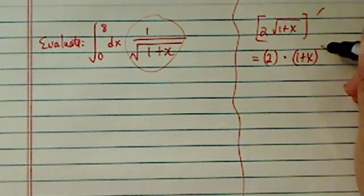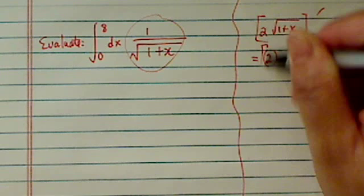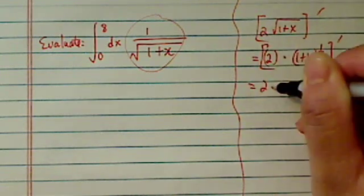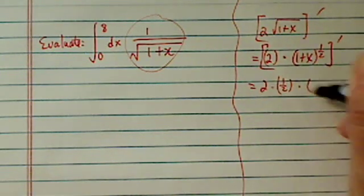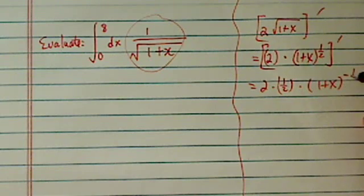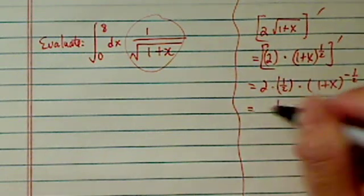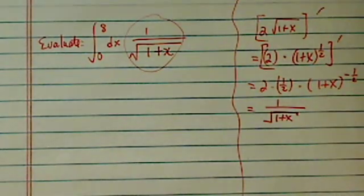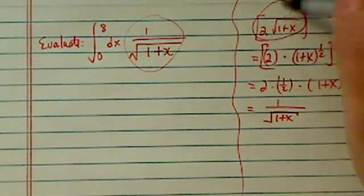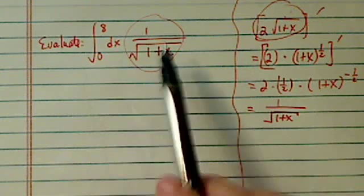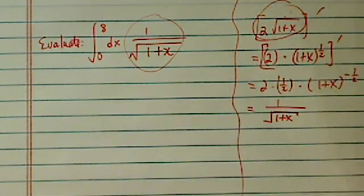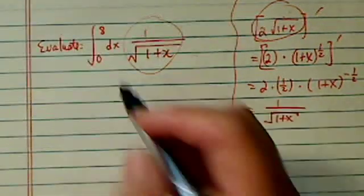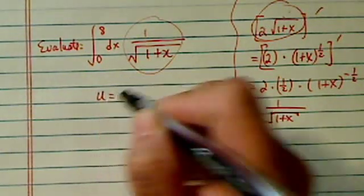It's 2 times 1 plus x to the half. If we take derivative of this one, that's equal to 2 times half times 1 plus x to the minus half. As you can see, it's 1 over 1 plus x. Now if you see this and you know this, of course the answer is going to be this whole thing equal to 2 plus square root of 1 plus x. But if you don't see this, let's see how we're actually going to derive it.